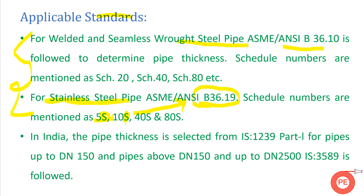Both ASME standards refer to American standards. In India, pipe thickness is selected from IS 1239 Part 1 for pipe sizes up to DN 150. For pipe sizes greater than DN 150 up to DN 2500, IS 3589 is followed. In Indian standards there is no concept of schedule numbers; instead, different thickness criteria are mentioned in IS 1239 Part 1 and IS 3589 for different pipe sizes.